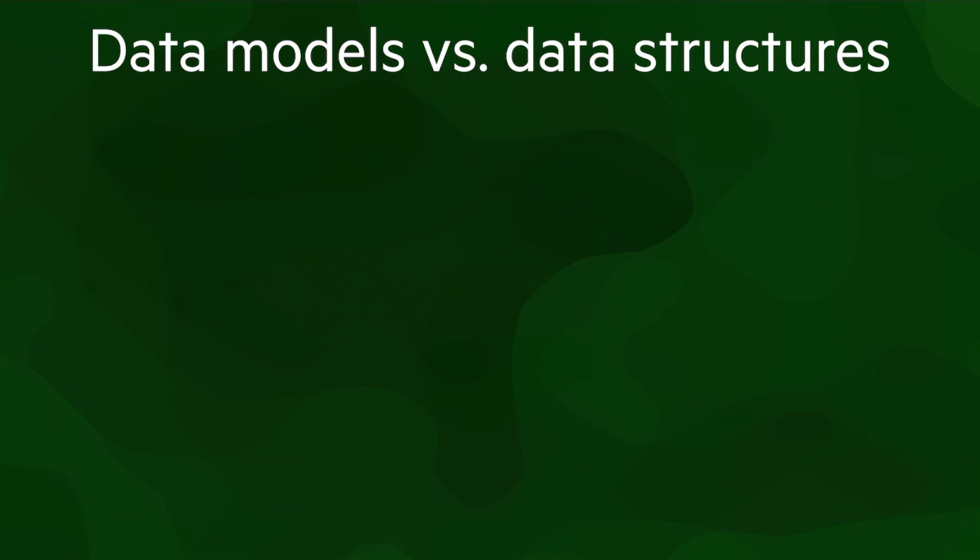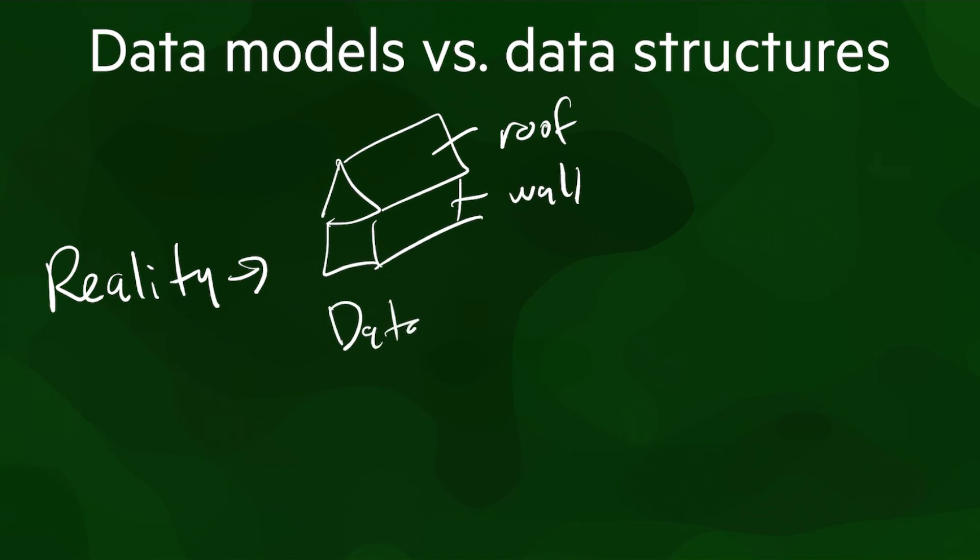Finally, let's finish the lesson by clarifying the difference between data models and data structures. So far, we have only been talking about representations in general, but there are actually different kinds of representations. Usually, when we model reality, we start by creating a high-level model that is close to the way we conceptualize the world. We can define some abstract objects with some attributes, such as a house composed of a roof and walls. This is a data model.